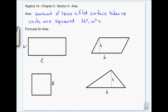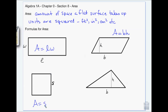For a rectangle, we have length and width, so area equals length times width. For a parallelogram, you have a base and a height, so area equals base times height. For a square, all the sides are the same length, so it's basically length times width but written as side squared.